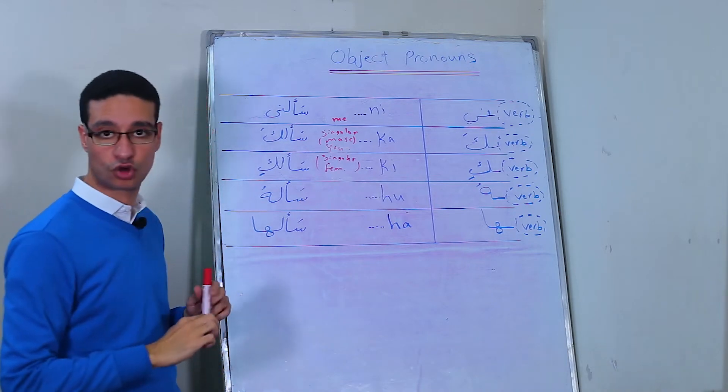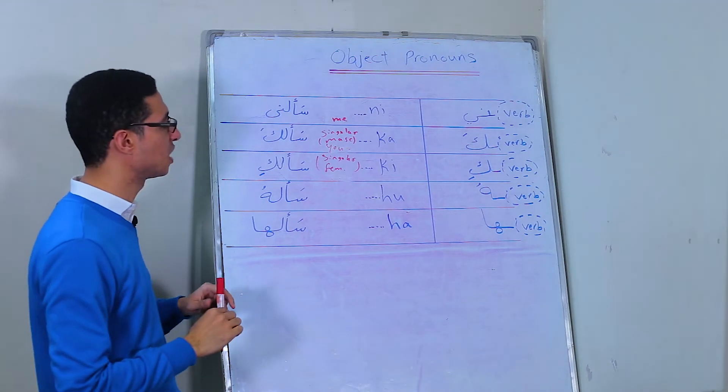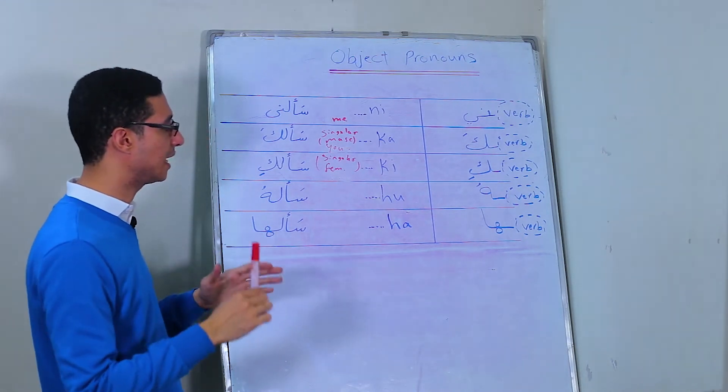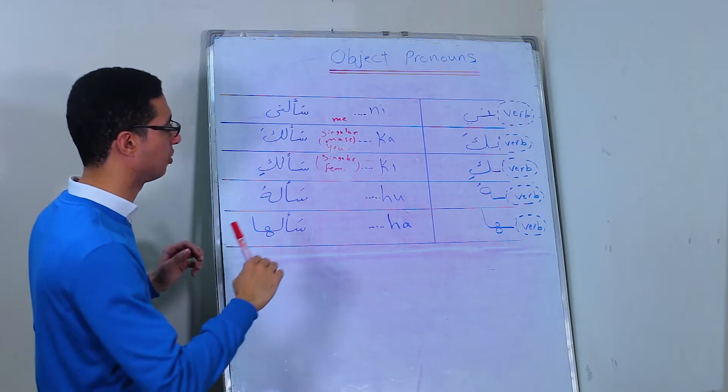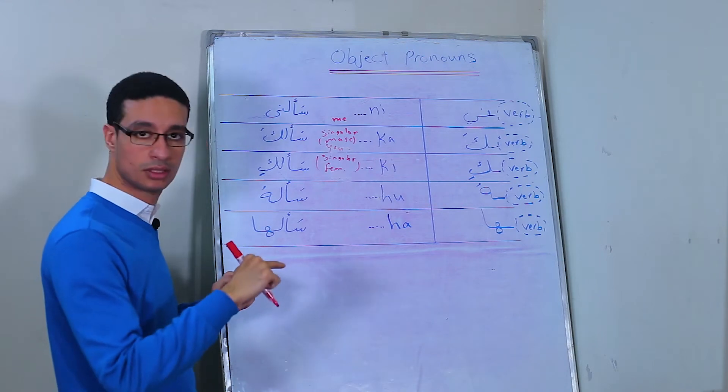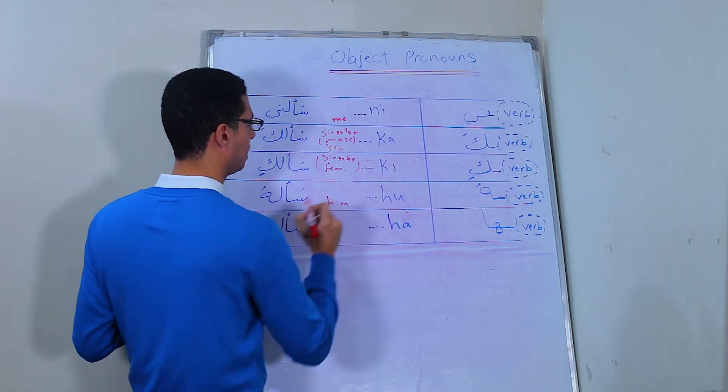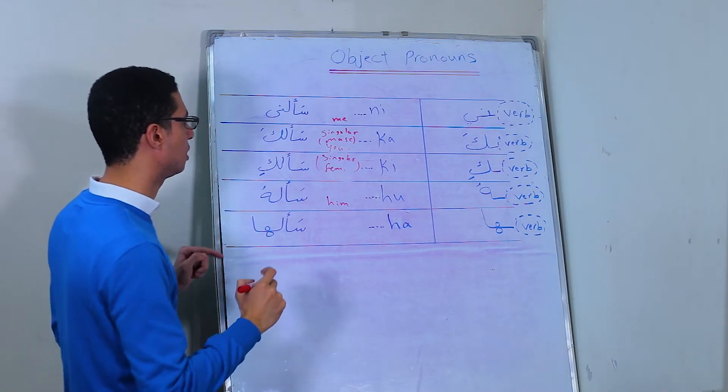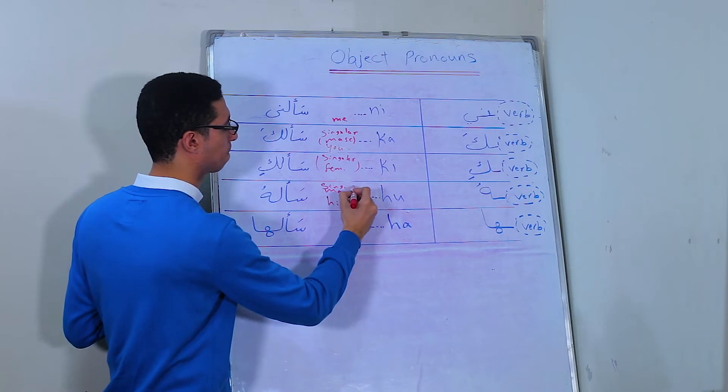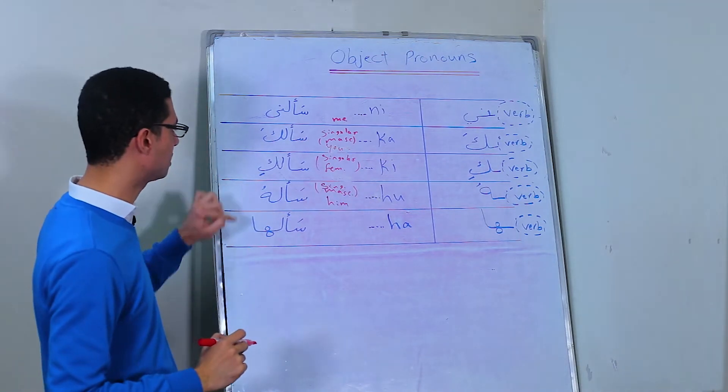Of course, in this group we are discussing the singular group only, but we will continue with the dual and the plural. Here it's هُ, which means him. So it's actually singular masculine. سأله, he asked him.